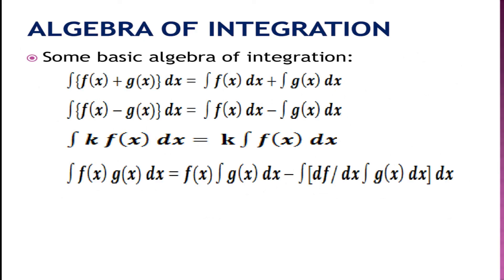Now look at the algebra of integration. Addition or subtraction of any two functions gives us their separate integrations for addition as well as subtraction. If k is any constant, then the integration of k times f(x) dx gives us k times the integration of f(x) dx — any constant multiplied with the function comes out in front of the integral. For the product of two functions f(x) and g(x), their integration gives a special rule known as the ILATE rule, which we will discuss in detail in another video.